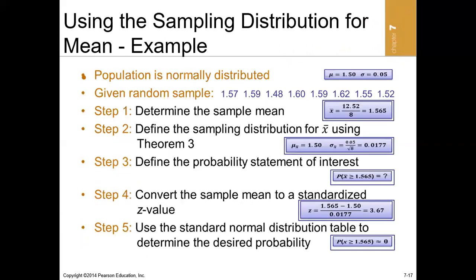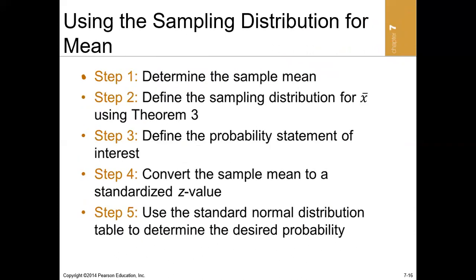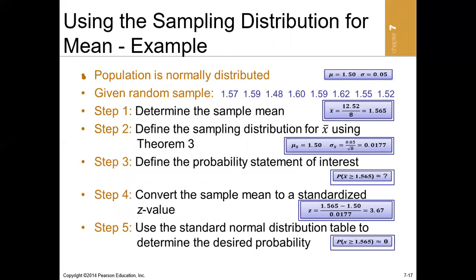To compute a z-value for a sample mean: first determine the sample mean, then define the sampling distribution using theory three, define the probability statement of interest, convert the sample mean to a z-value, and use the standard normal distribution to determine the desired probability.